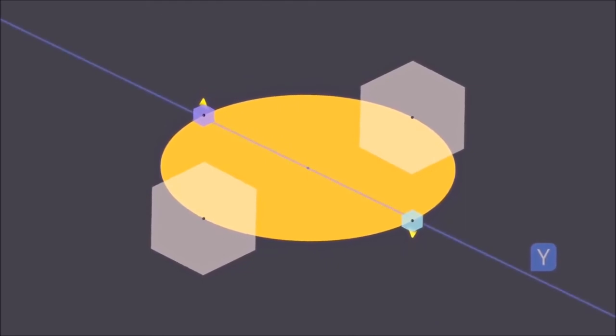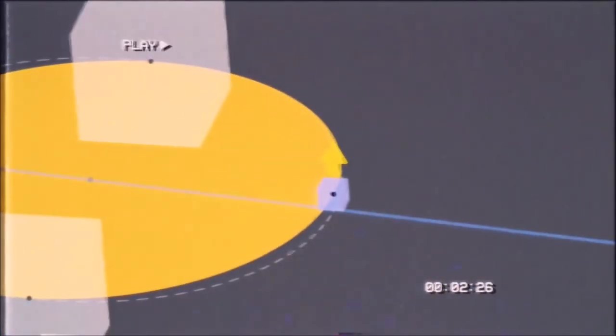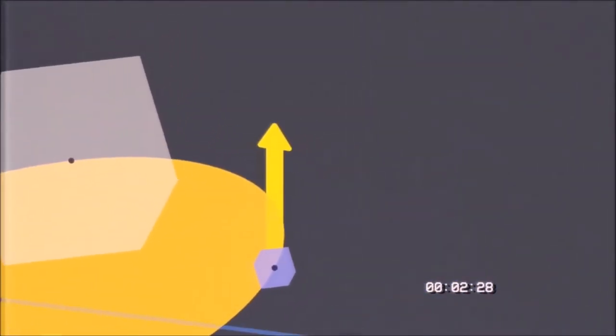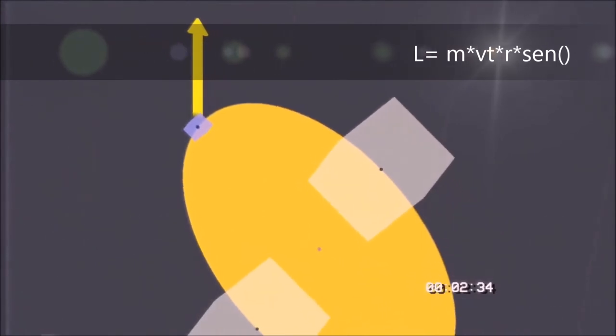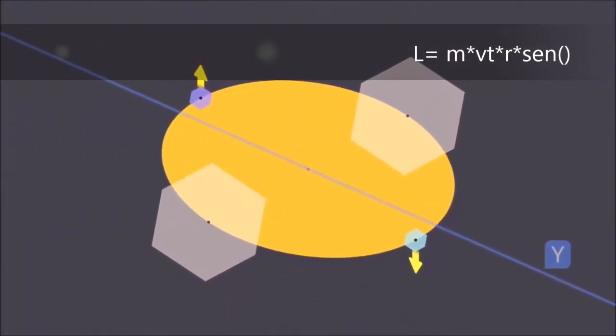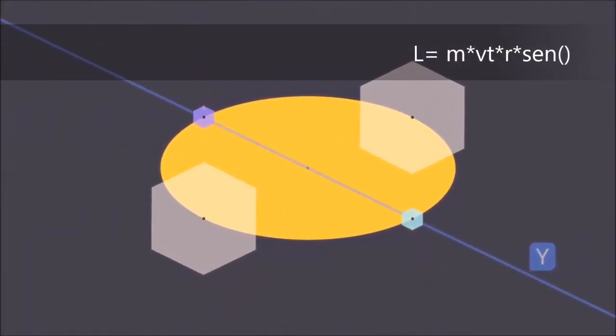It is a vector magnitude, so it must have a magnitude and a direction. And the formula to calculate it is mass by tangential speed by radius of movement by sin of the angle.